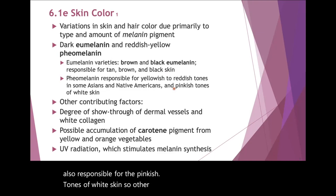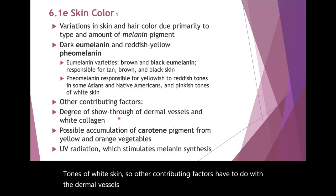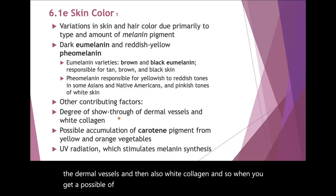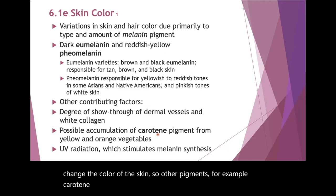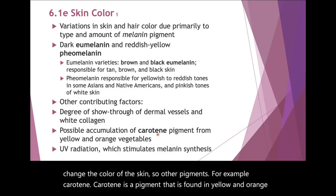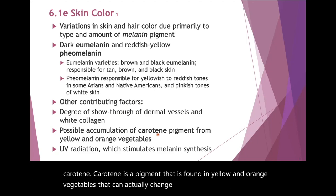Other contributing factors have to do with the dermal vessels and also white collagen. When you get a possible accumulation of other pigments, that can actually change the color of the skin. For example, carotene is a pigment found in yellow and orange vegetables that can actually change the color of the skin.